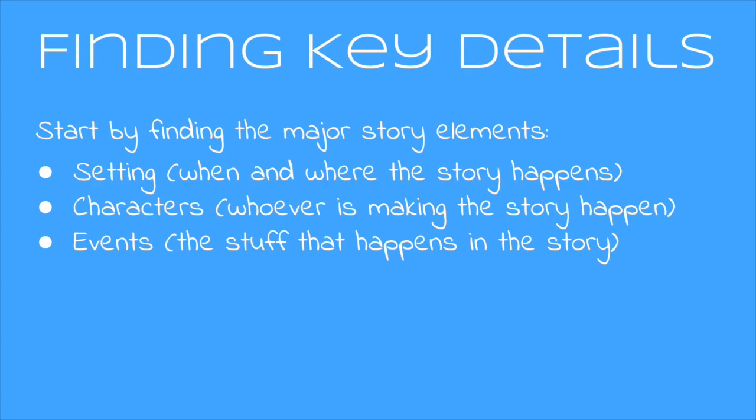When we find key details we want to start by finding the major story elements. Setting — that's when and where the story happens. Characters — that's whoever is making the story happen. And events — the stuff that happens in the story. You ready to give it a try? Okay, let's go.